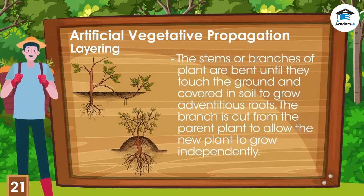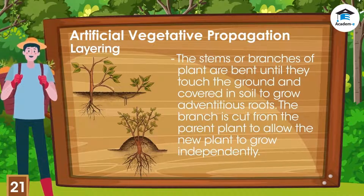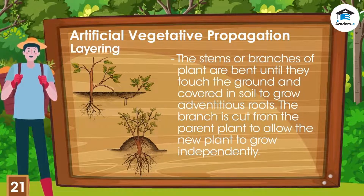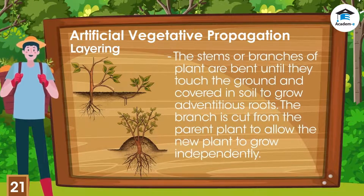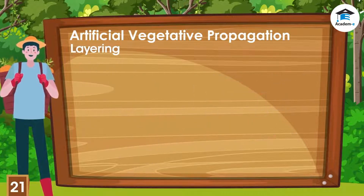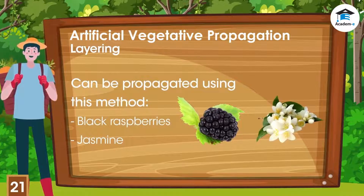Layering is a method wherein stems or branches of a plant are bent until they touch the ground and covered in soil. Adventitious roots eventually develop from the soil-covered stem, forming a new root system called the layer. The branch is then cut from the parent plant to allow the new plant to grow independently. Plants with young and flexible stems can be propagated this way; black raspberries and jasmine are examples.